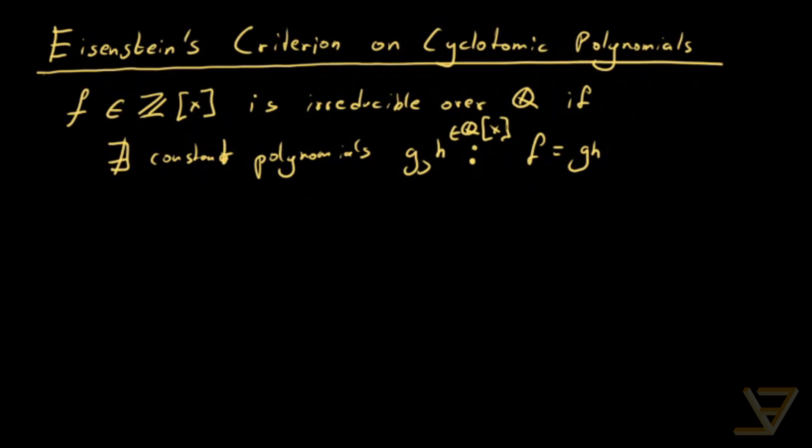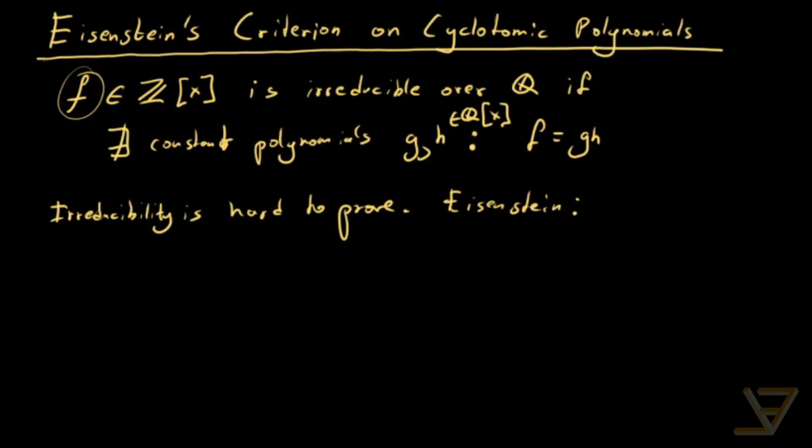So this is the definition of an irreducible polynomial f, and in general irreducibility is hard to prove. But Eisenstein gives us a sufficient criterion that works sometimes. It won't work in all cases, but it does give us a technique that allows us to prove that certain polynomials are irreducible.